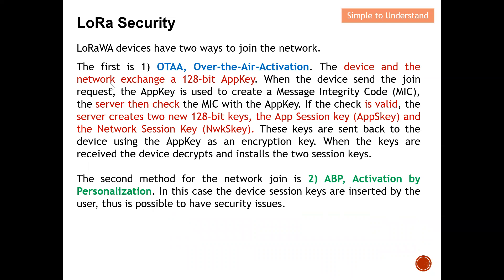With Over the Air Activation, the device and the network share a 128-bit AppKey. When the device sends a join request, the AppKey is used to create a Message Integrity Code, or MIC. The server then checks the MIC with the AppKey. If the check is valid, the server creates two new 128-bit keys: the Application Session Key and the Network Session Key. These keys are sent back to the device using the AppKey as an encryption key.